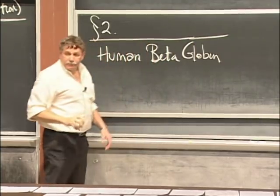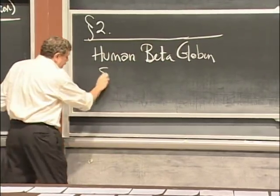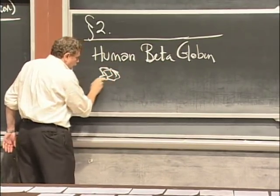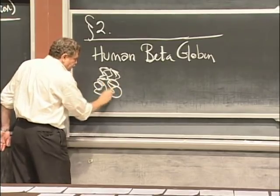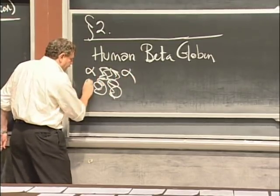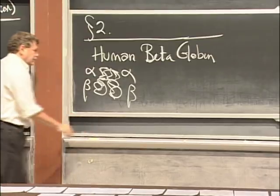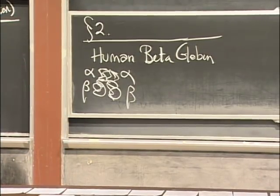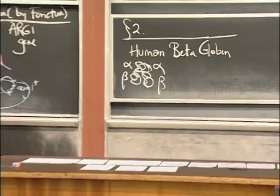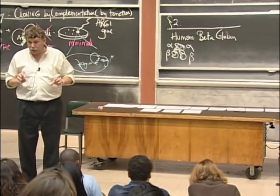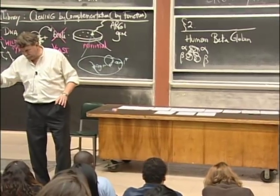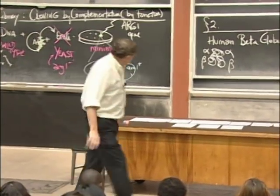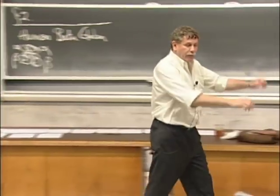I want to clone human beta-globin. Hemoglobin is a tetramer, it has four parts. It's got an alpha, an alpha, a beta, and a beta. Four proteins come together in a protein tetramer with two alphas, two betas. The beta subunit of hemoglobin is encoded by the human beta-globin gene. That's the nomenclature here. Let's clone beta-globin.